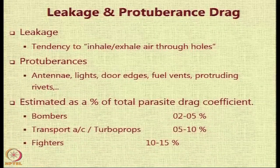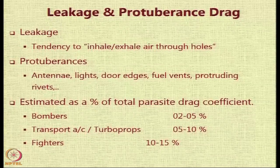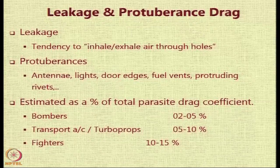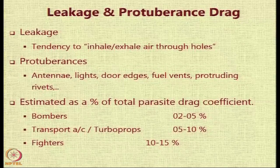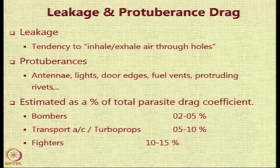Normally, a percentage is taken based on historical information. Bombers have approximately 2 to 5 percent additional parasite drag due to protuberances. Transports and turboprops have higher values up to 10 percent, while fighters — which have many appendages, drop tanks, and armaments protruding — have much larger values of 10 to 15 percent.